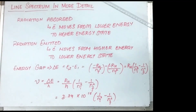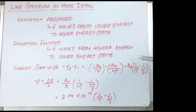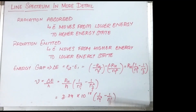Regarding the line spectrum of hydrogen in more detail: radiation is absorbed by the electron if it moves from an orbit of smaller quantum number to a higher quantum number, i.e., from lower to higher energy state. Radiation is emitted when the electron moves from a higher to a lower energy state. The energy gap delta E equals E2 minus E1, which equals R_H × (1/N_i² minus 1/N_f²). The frequency equals 3.29 × 10¹⁵ × (1/N_i² minus 1/N_f²).